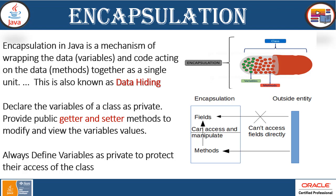Declare the variables of a class as private to protect access from other classes, and provide public Getter and Setter methods to modify and view the variable values. Always define variables as private to protect access — this is very important. Whenever other classes or outside entities try to access the variables or fields directly, it will show you an error. We'll see it in the demonstration — that will be more clear.